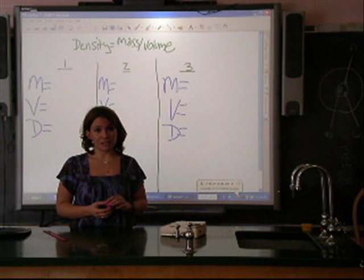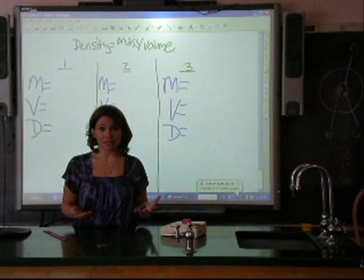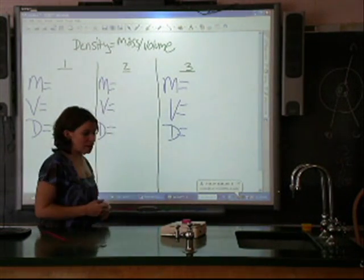The first thing we need to find when finding the density of a substance is its mass. To do that, place it on a scale. To the nearest tenth, the mass of this object is 23.5 grams.